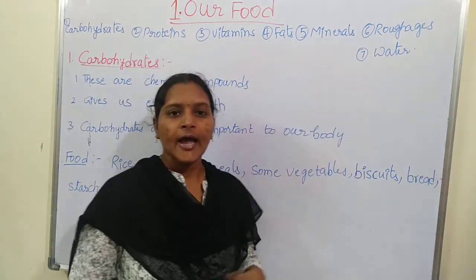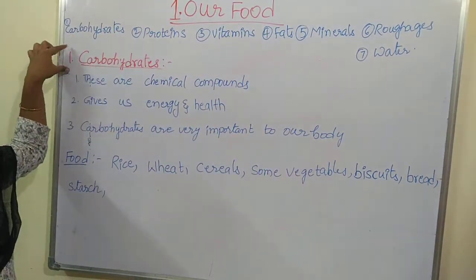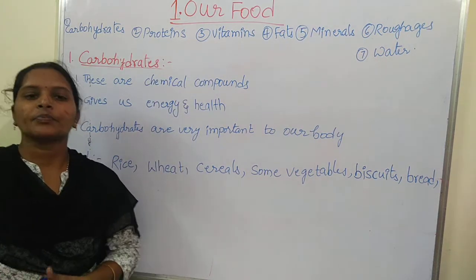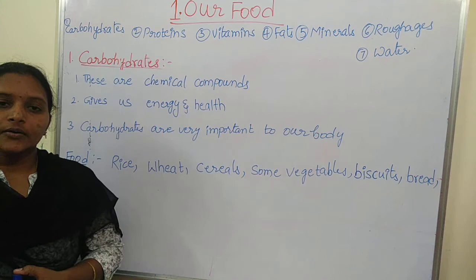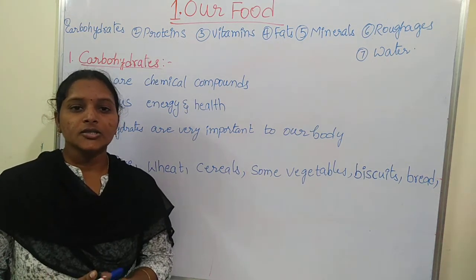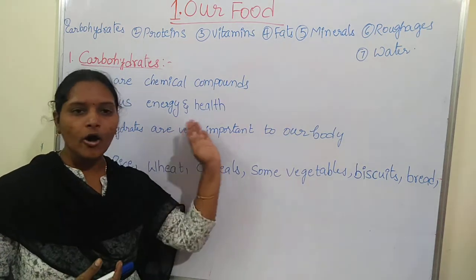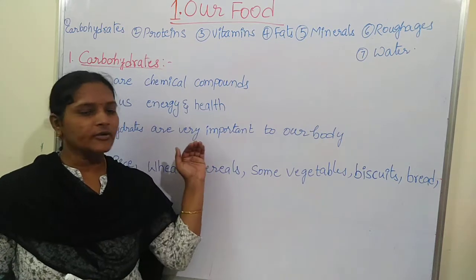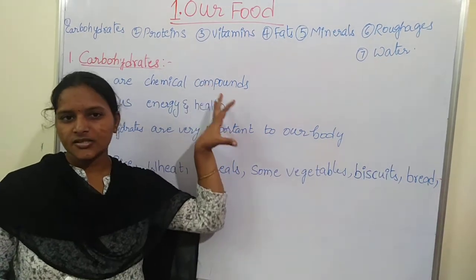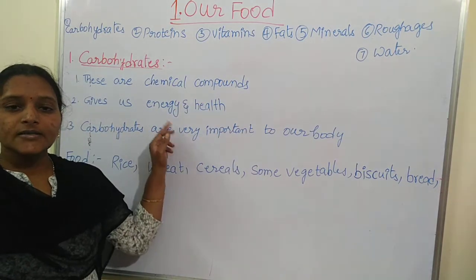Of these seven, the first one is carbohydrate. What are carbohydrates? Carbohydrates are chemical substances present in our food. These are hydroxy carbonyl compounds. Every sugar and starch comes under this category.